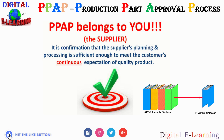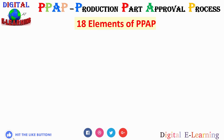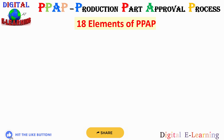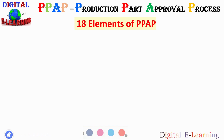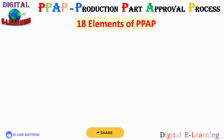This process is basically for suppliers and not for customers. The PPAP process consists of 18 elements that may be required for approval of producing level parts. Not all of the elements are required for every submission.